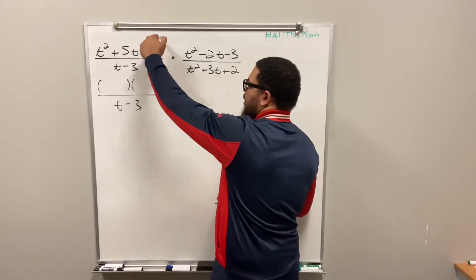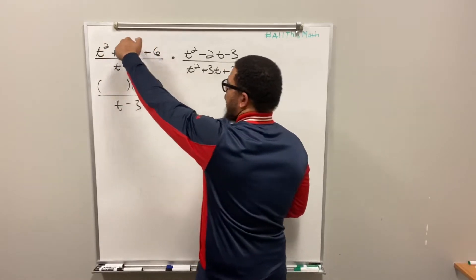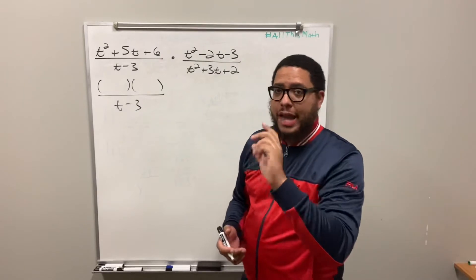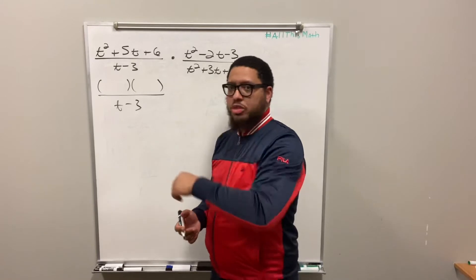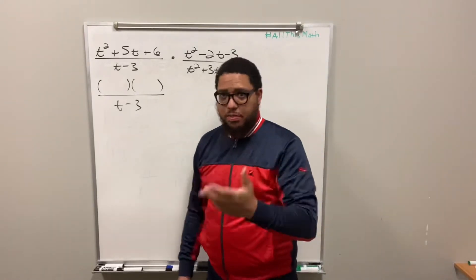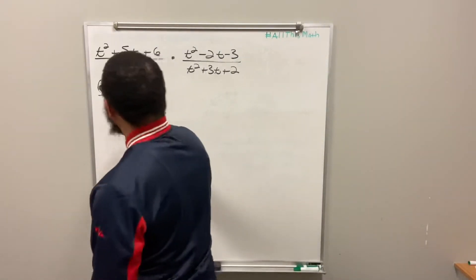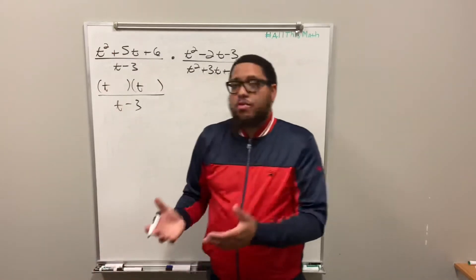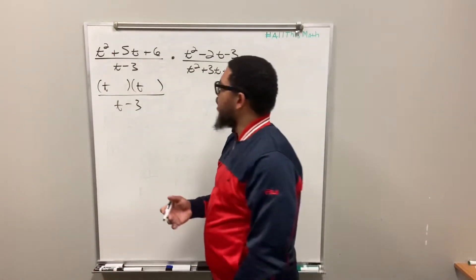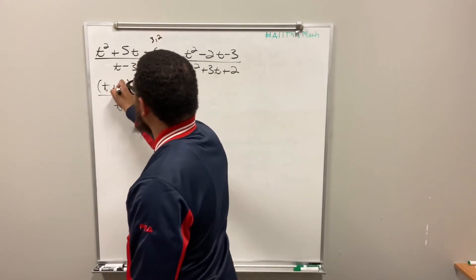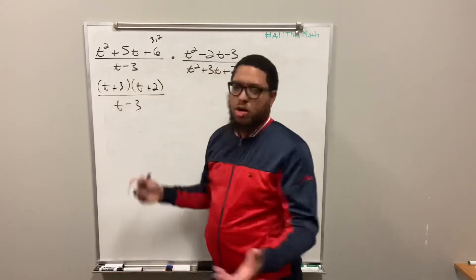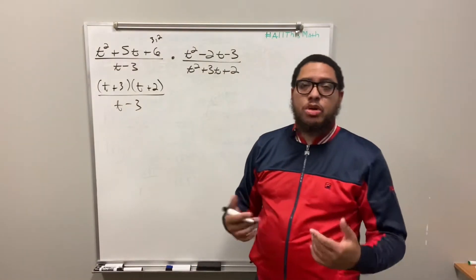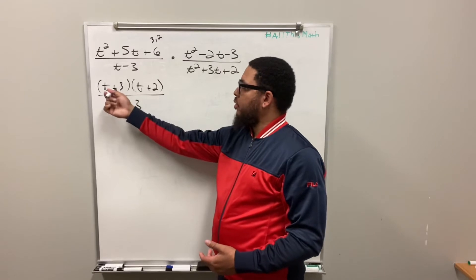What we're looking for is two factors of 6 that add up to 5. Now 6 doesn't have a lot of factors — it's either 6 times 1 or 3 times 2. 6 plus 1 doesn't add up to 5, so we rule those out. What about 3 times 2? 3 times 2 is 6, and 3 plus 2 is 5 — exactly. So you take the square root of t squared, put a t here and a t here, then put 3 in one parenthesis and 2 in the other. It doesn't matter which parenthesis they go in because multiplication is commutative.